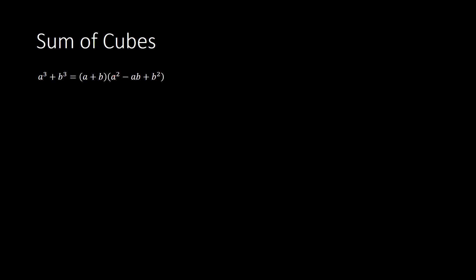Here is the principle. If you have a cubed plus b cubed, then you take that first value that was being cubed and put it here, and the second value being cubed goes here. The first value squared is the first term in the second parenthesis. The last value squared is the last term. You multiply a and b together to get ab. If it was a plus sign, you put a plus here too, then a minus sign, and the last term will always be a plus b squared.